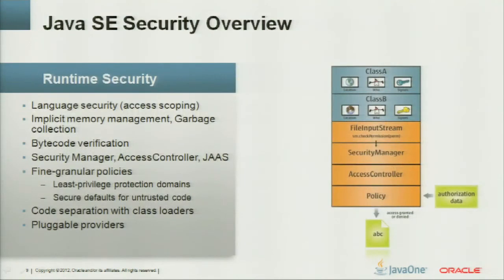Runtime security includes language security, implicit memory management, garbage collection, bytecode verification, security manager, access controller, and JARs. This constrains what's allowed to run and how it's allowed to run, enforced by fine-granular policies. You want least-privileged protection domains and secure defaults for untrusted code like applets or Java WebStart applications. This is normally enforced by code separation with class loaders.